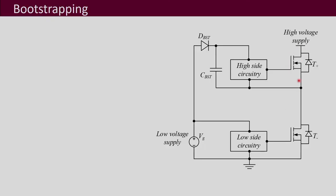Bootstrapping can be explained with the help of one leg of an H-bridge. For the lower MOSFET, the source is non-floating — it is fixed and does not change. As we turn on and turn off the device, we apply the gate pulse with respect to the source whose potential is fixed. Whereas for the upper MOSFET, which is also called the high-side gate drive, the source point is floating.